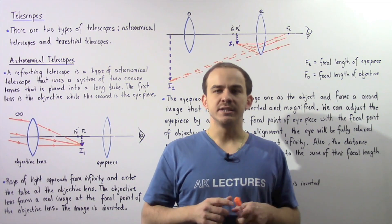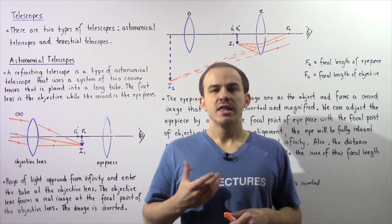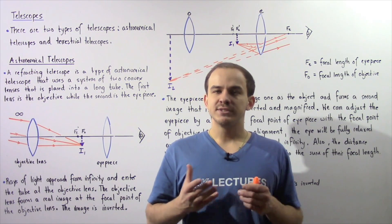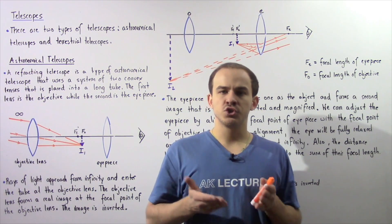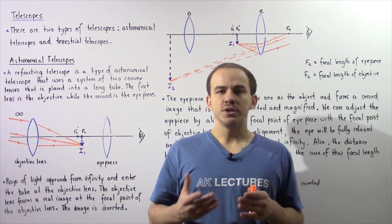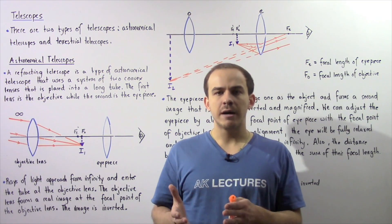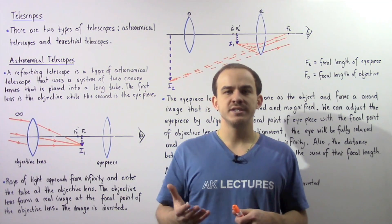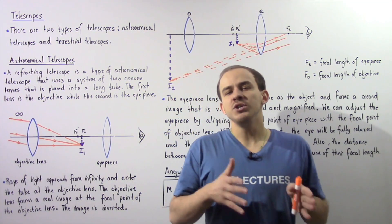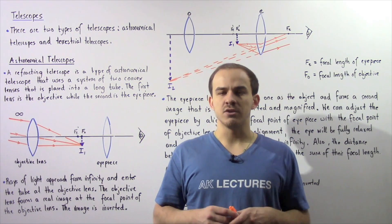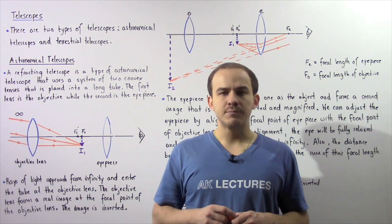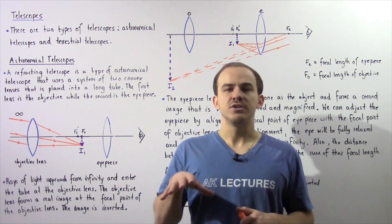Telescopes are a type of optical device that can be used to view objects very far away. Telescopes can be grouped into two categories: astronomical telescopes, which are used to view objects very far away such as distant stars, galaxies, and planets; and terrestrial telescopes, which are used to view objects found on Earth.